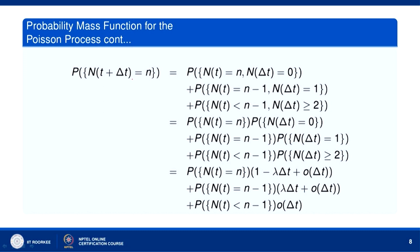The n occurrences in the time interval 0 to t + Δt may occur in three ways: first, n occurrences during 0 to t and no occurrence between t and t + Δt; second, n − 1 occurrences during 0 to t and 1 occurrence from t to t + Δt; third, n − 2 or fewer occurrences during 0 to t and 2 or more occurrences between t and t + Δt.